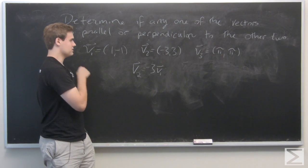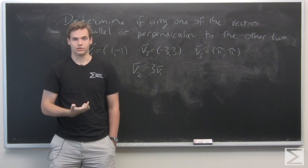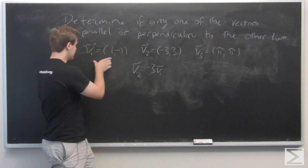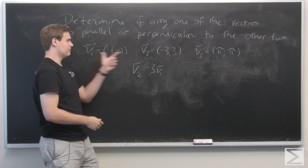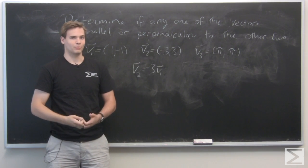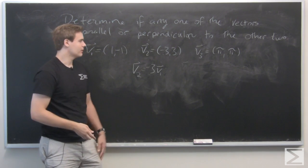Now we're going to see if any of the vectors are perpendicular to each other. We test v1 and v3. Since we know v1 and v2 are parallel, we know that they're not perpendicular, so we can throw that one out right away.